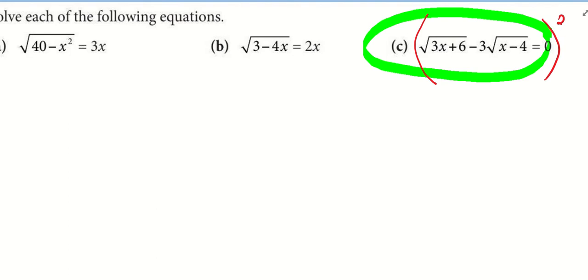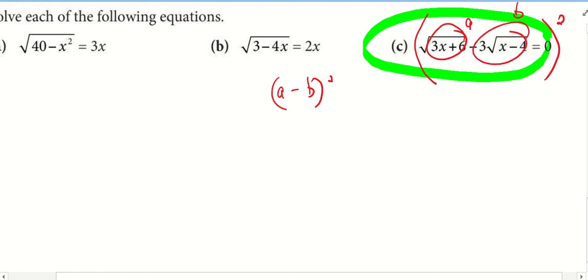If I make use of this choice, I need to use identity. Meaning, A minus B bracket square. Can you see? This is my A. Can you see? This is my B. Then what happened? A square minus 2AB.